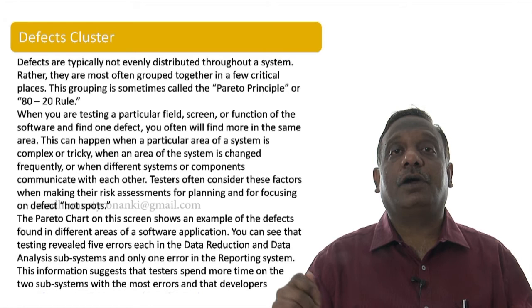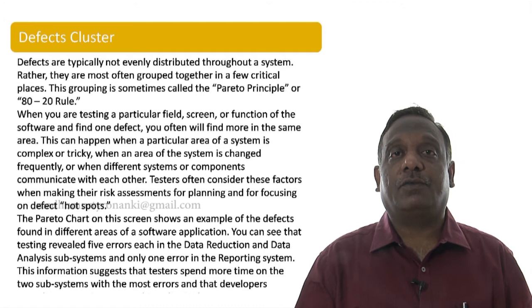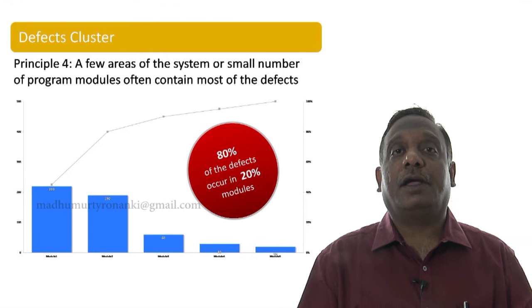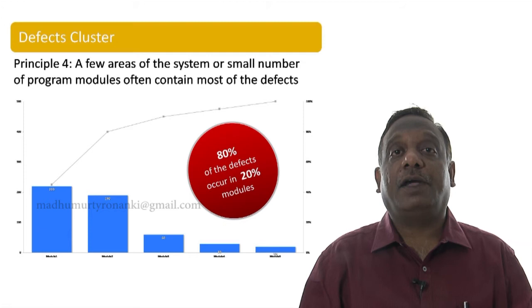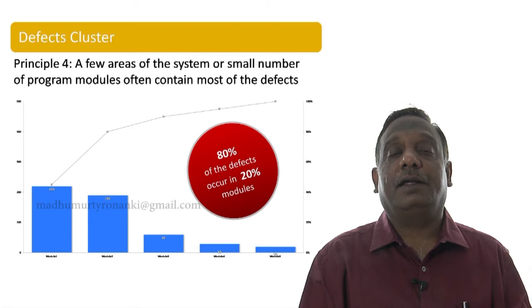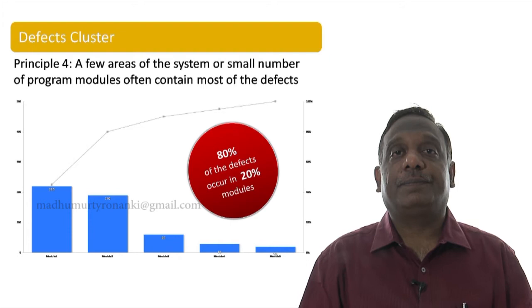He then created the 80-20 rule. In software quality and testing, whenever we plot a histogram of defect distribution by subsystem, the same pattern emerges. In our example with five modules and 500 total defects, 80 percent of defects tend to occur in module 1 and module 2, while the remaining three modules account for only 20 percent of defects.